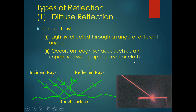Basically, anything that is not a perfectly smooth surface produces diffuse reflection — including the screen in front of you, your tables, your chairs, and your arms.